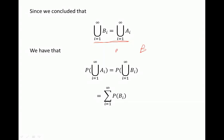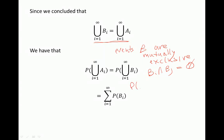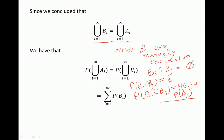Since events B are mutually exclusive — meaning Bi intersect Bj is an empty set — the probability of the union of mutually exclusive events equals the sum of their individual probabilities. Therefore, the probability of the union of A events equals the probability of the union of B events, which equals the sum of probabilities of the B events.